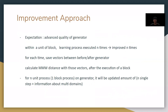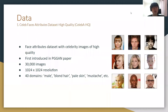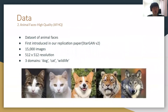For our project, we use the same datasets as our main paper. We will use the CelebHQ dataset, which consists of celebrity images — 30,000 images across 40 domains. We will also use the AFHQ dataset, which consists of animal faces — 15,000 images across three domains.